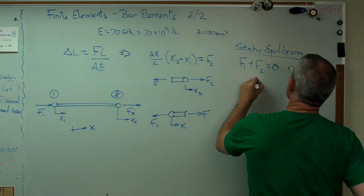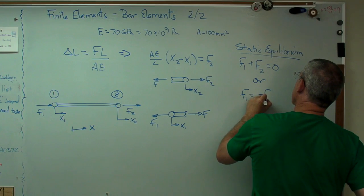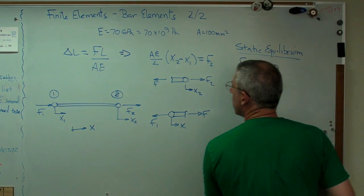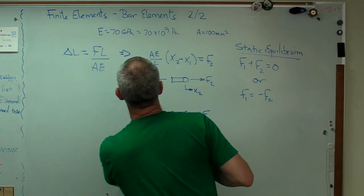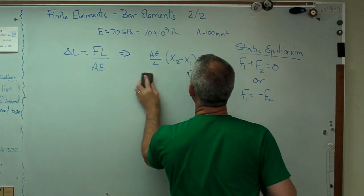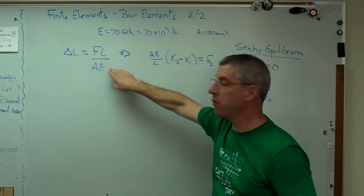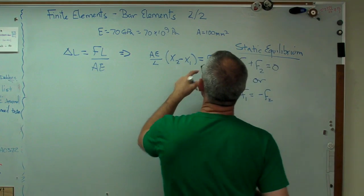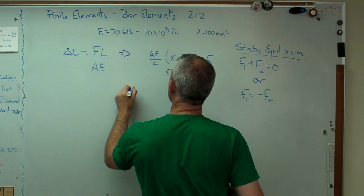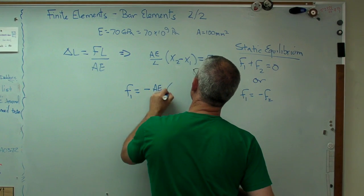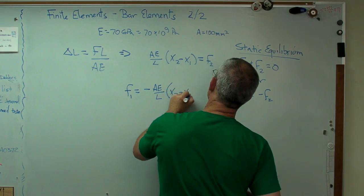So let me erase some of this stuff, and what I'm going to do is I'm going to write that equation, and I'm going to write one more that's almost like it, except there's going to be a minus sign. So let's do it this way. f1 equals minus f2. See where I'm headed here? Let's start with just this expression right there, which comes directly from an expression we already know about for bar elements. And if that's f2, then f1 equals minus ae over l x2 minus x1.